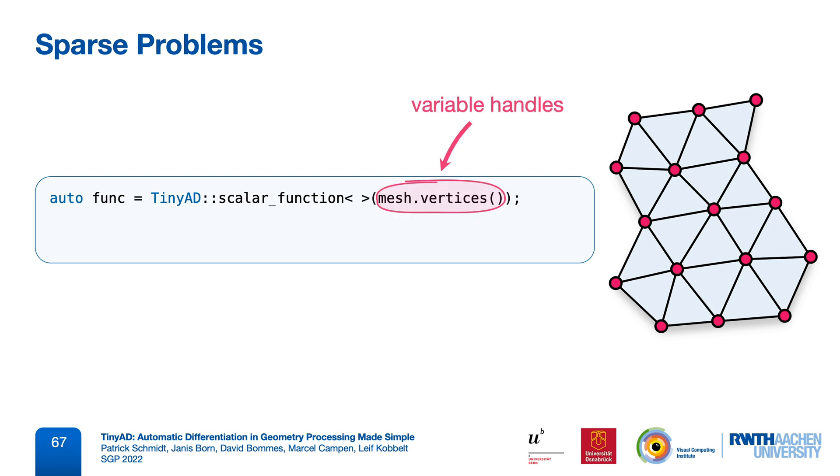Here, we use vertex handles from the OpenMesh library, but we could use primitives from any other mesh library, as long as they can be converted into indices. Or, if we were working with libigl, then our variable handles would just be a set of row indices into a vertex matrix. We then declare that each vertex is associated with two scalar variables, here the UV coordinates in the plane.